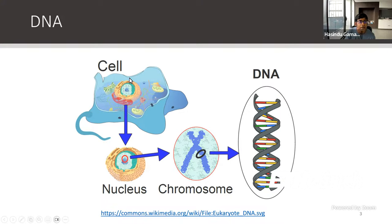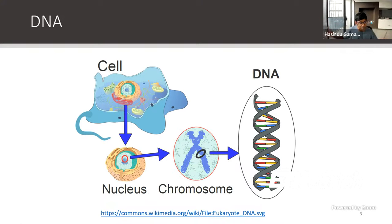So what is this genome? In the cell there is something called the nucleus, the center of the cell. There we have genome information encoded in molecules called DNA. If it is organisms like humans, it would be DNA; if it is viruses, it would be RNA. There are things called chromosomes, which are like chapters in a book.